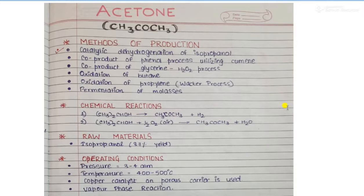The molecular formula for acetone is CH3COCH3. The methods of production are: catalytic dehydrogenation of isopropanol, co-product of phenol process utilizing cumene, co-product of glycerine H2O2 process, oxidation of butane, oxidation of propylene which is also known as Wacker process, and fermentation of molasses.